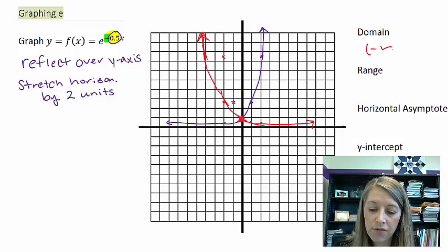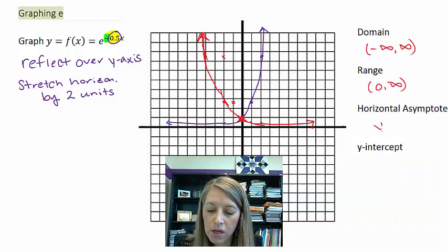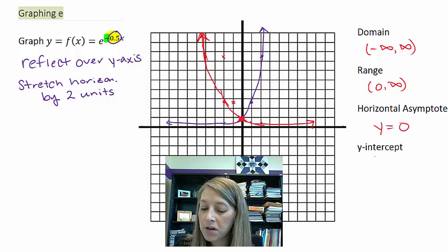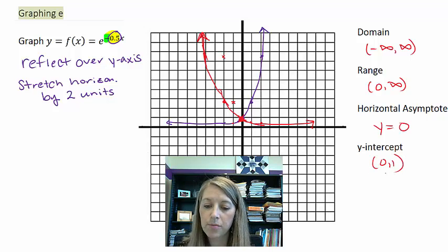Domain, no difference. Range, no difference. Horizontal asymptote, no difference. And the y-intercept, also no difference.